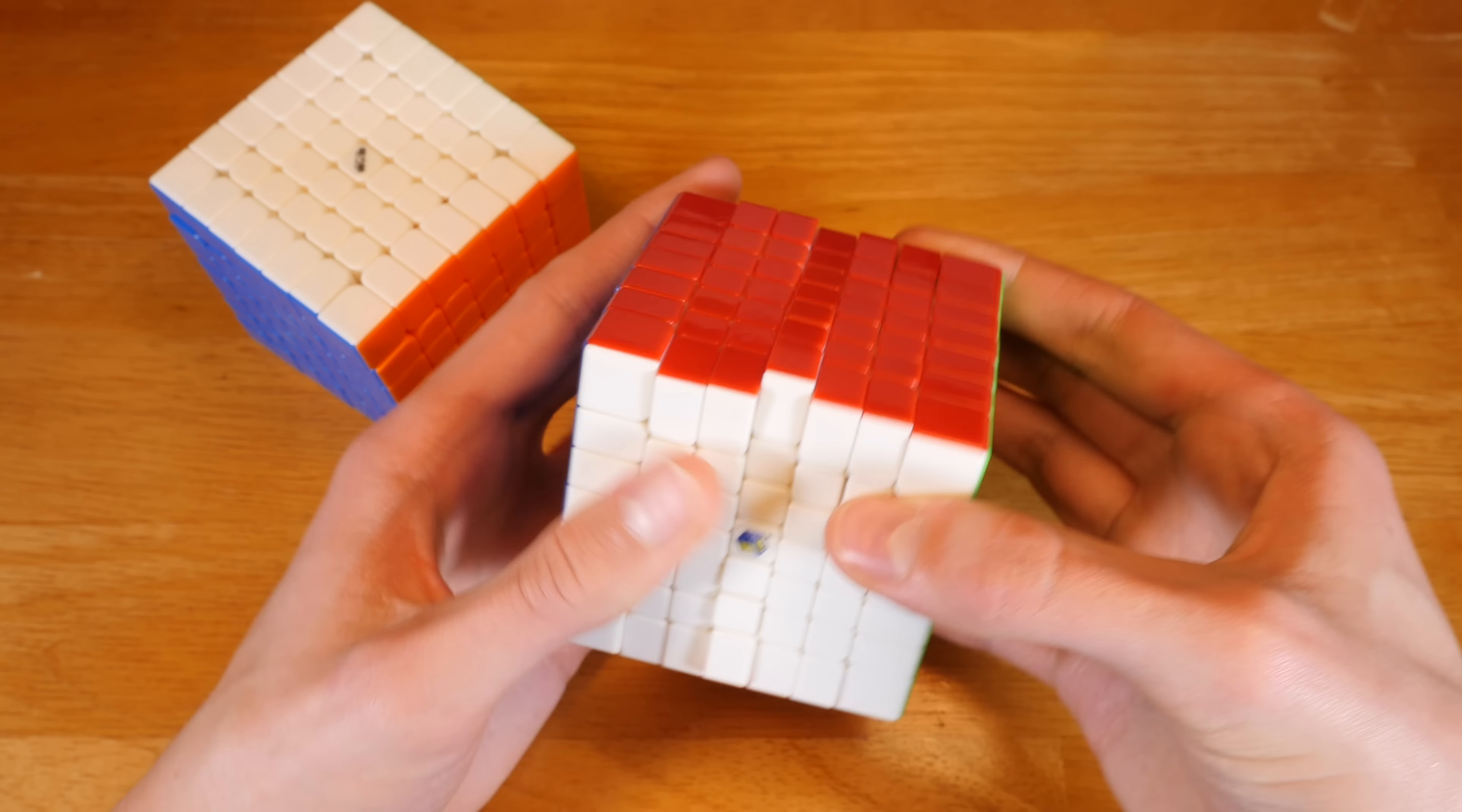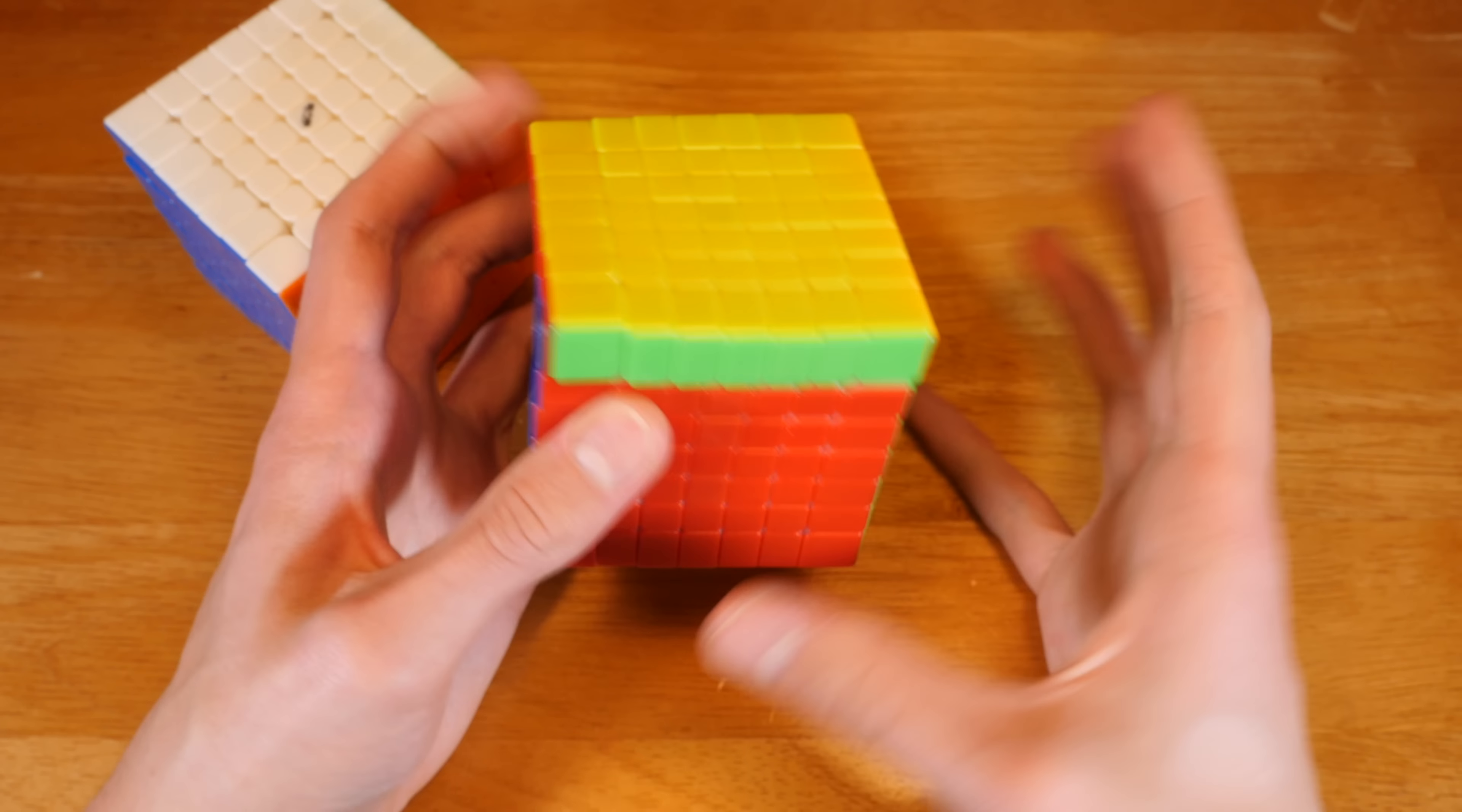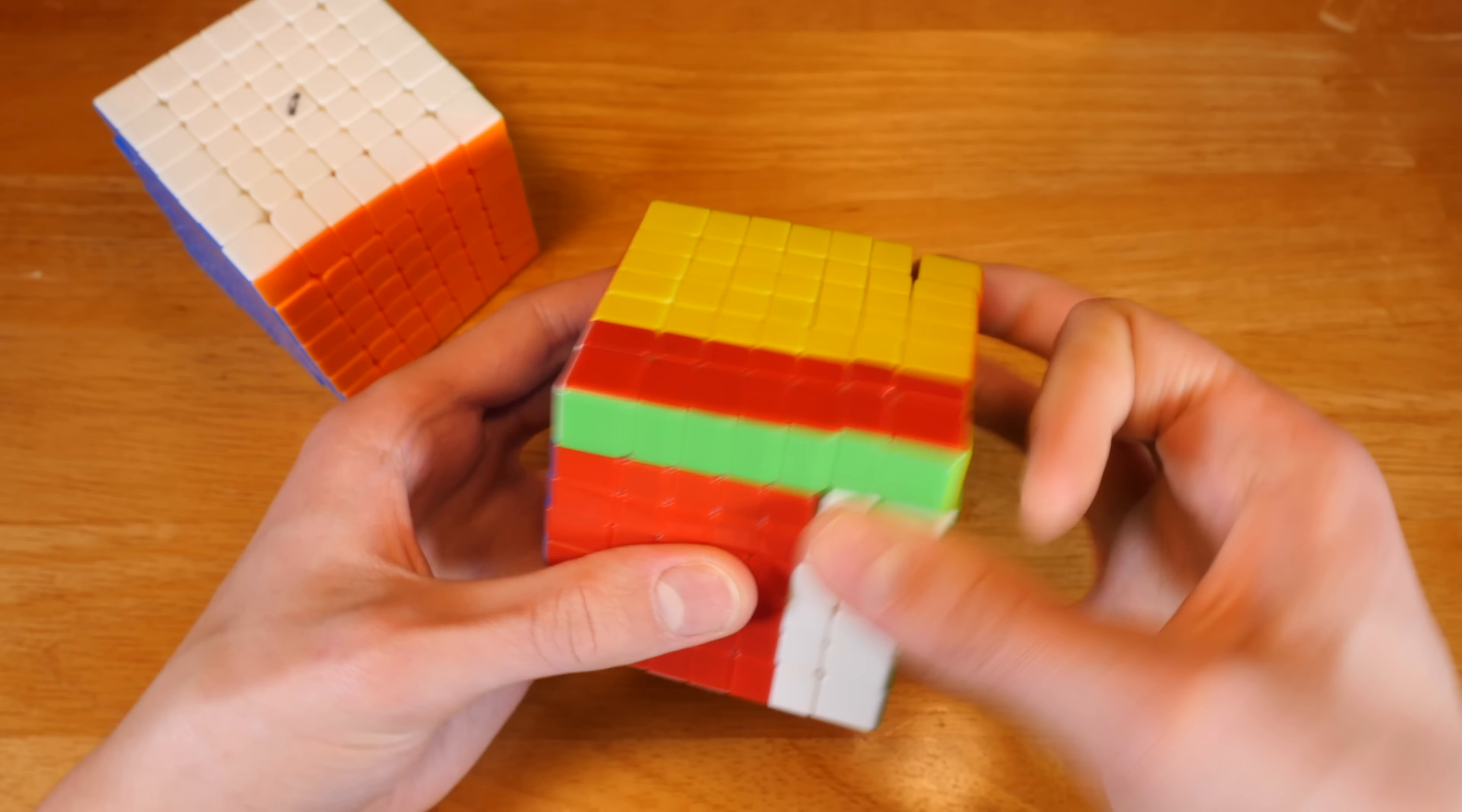But the Yuxin is very smooth. It does suffer from these nasty catches which can be very annoying, like that. So I would be aware of that. If you're a very accurate turner and you do enjoy very smooth cubes, this is going to be an unbelievably fantastic option for you.